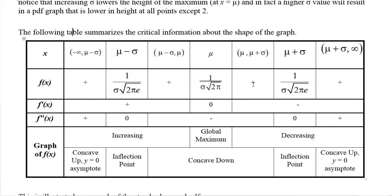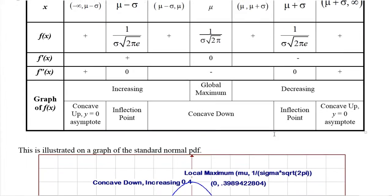At x = μ+σ: another inflection point (second derivative zero, first derivative negative — decreasing at inflection point). From μ+σ to positive infinity: function positive, derivative negative, second derivative positive — decreasing concave up, with a right horizontal asymptote.